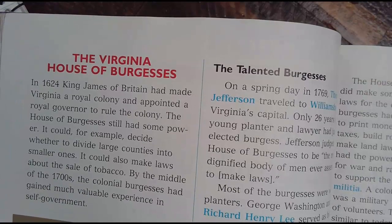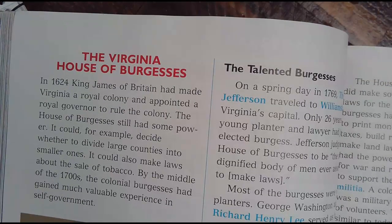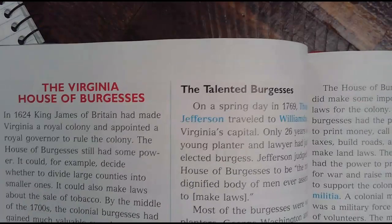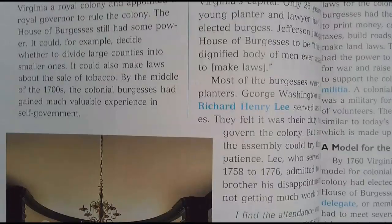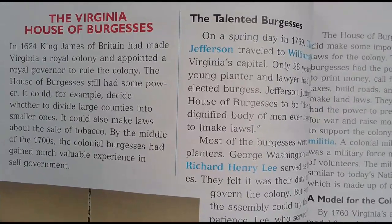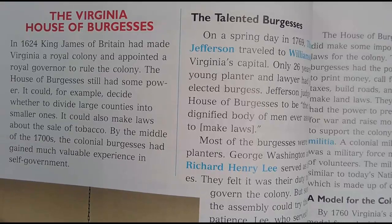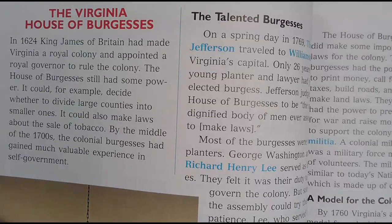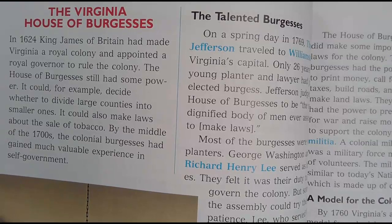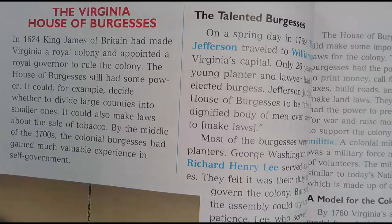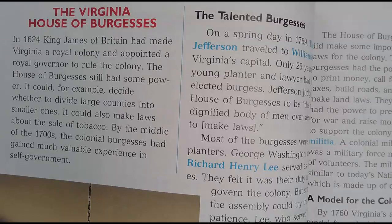The Virginia House of Burgesses. In 1624, King James of Britain had made Virginia a royal colony and appointed a royal governor to rule the colony. The House of Burgesses still had some power — it could decide whether to divide large counties into smaller ones and make laws about the sale of tobacco. By the middle of the 1700s, the colonial Burgesses had gained much valuable experience in self-government.